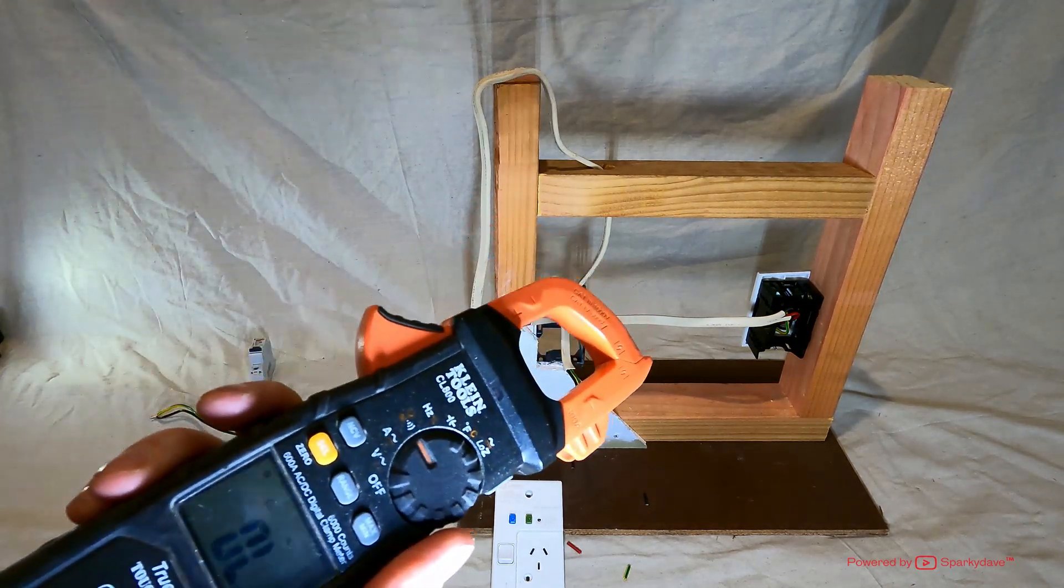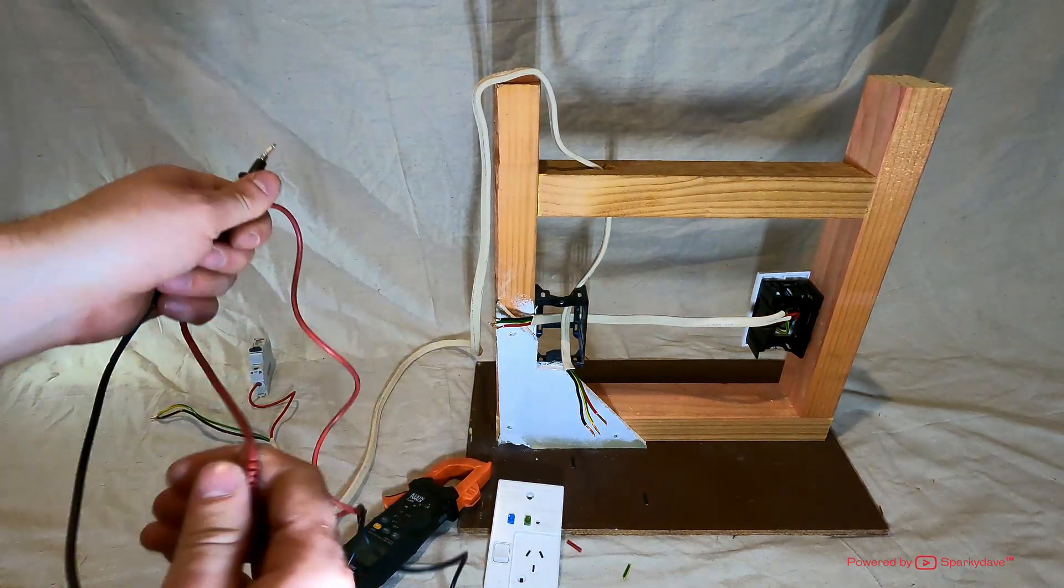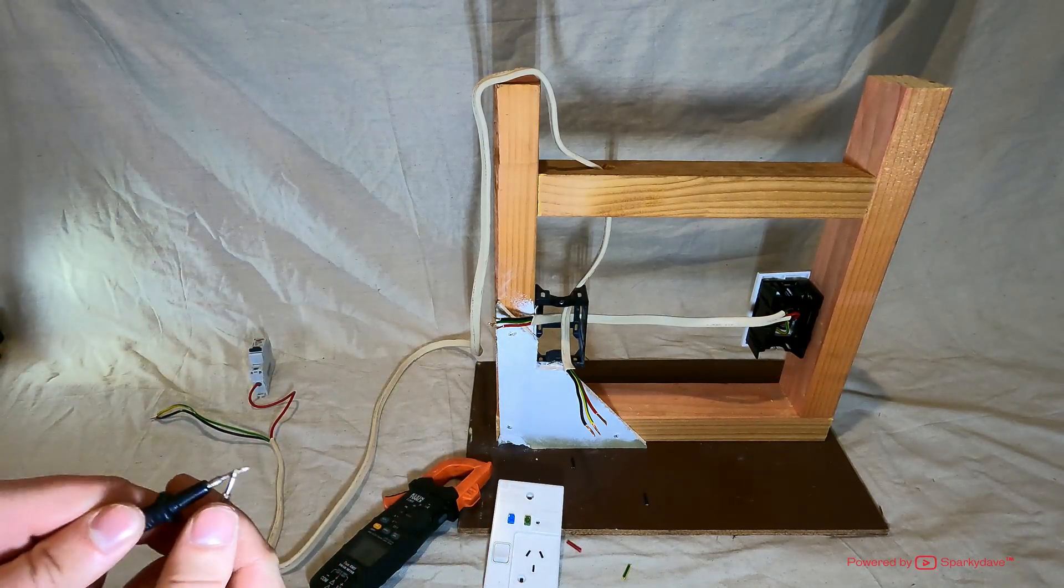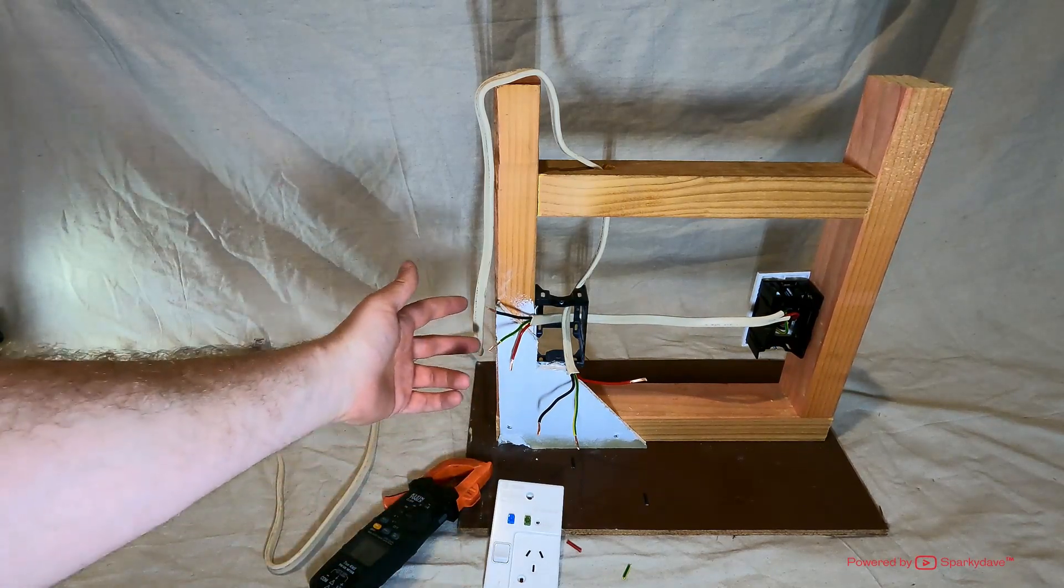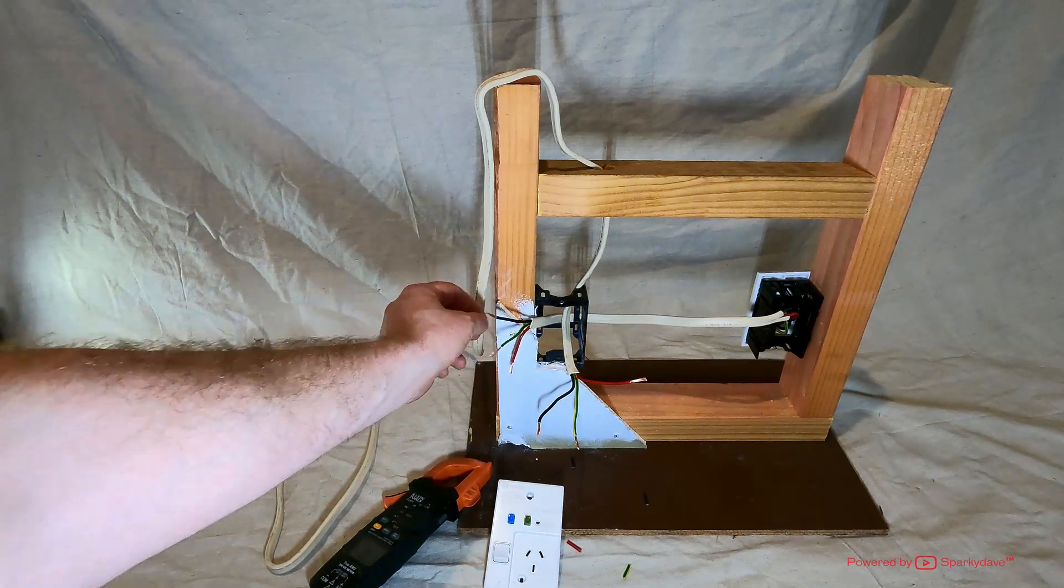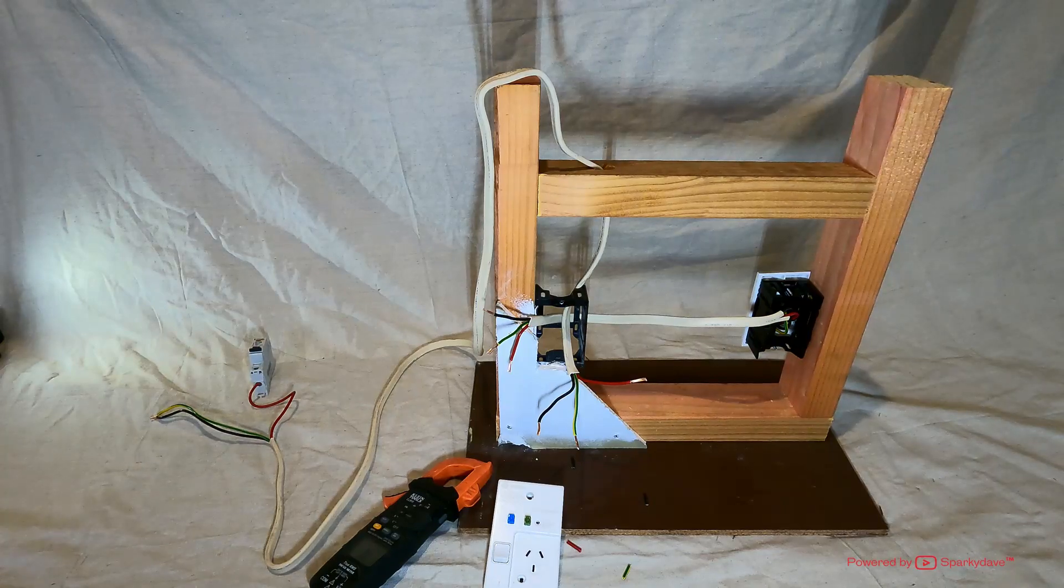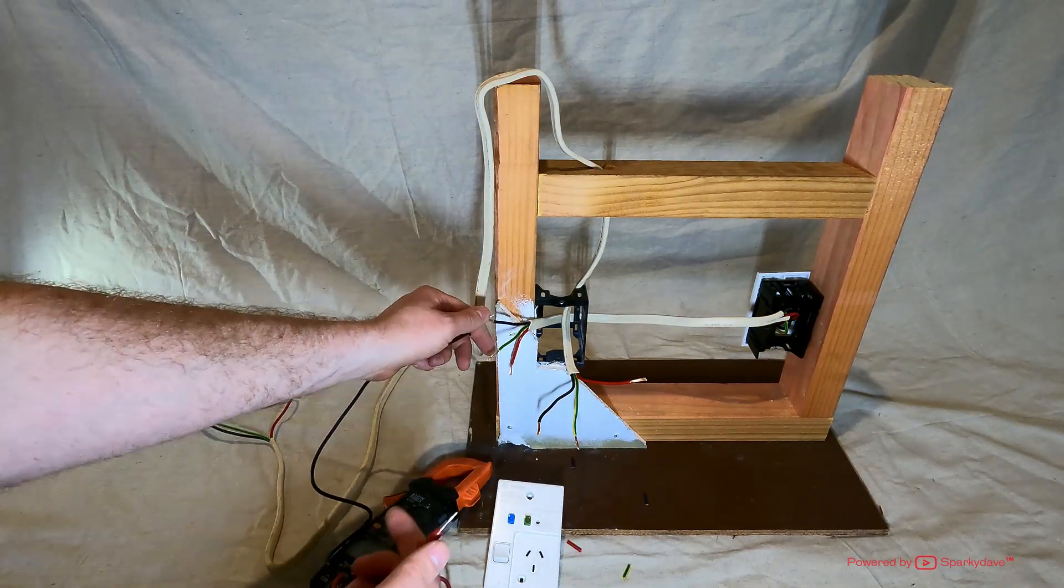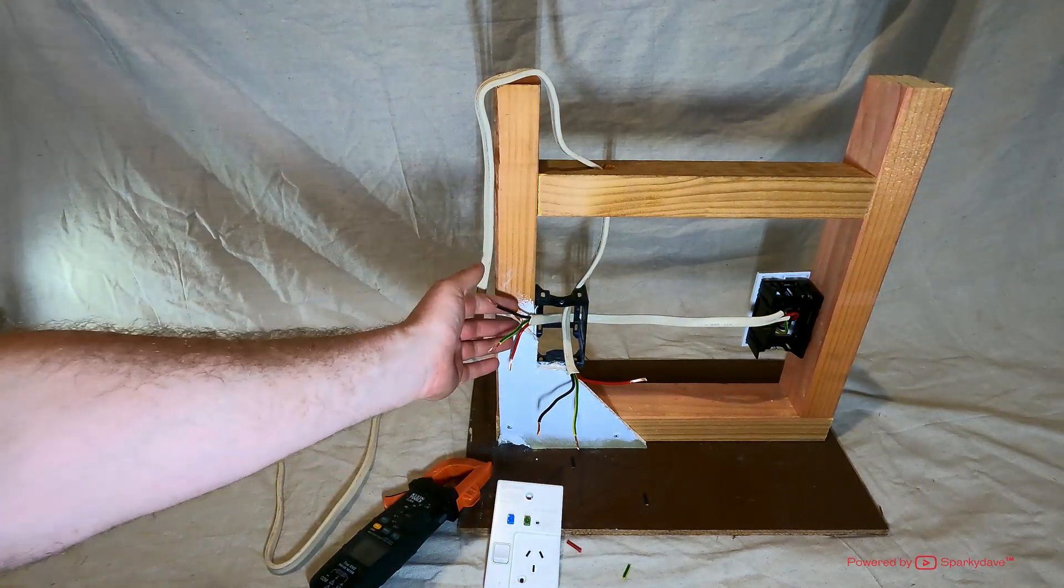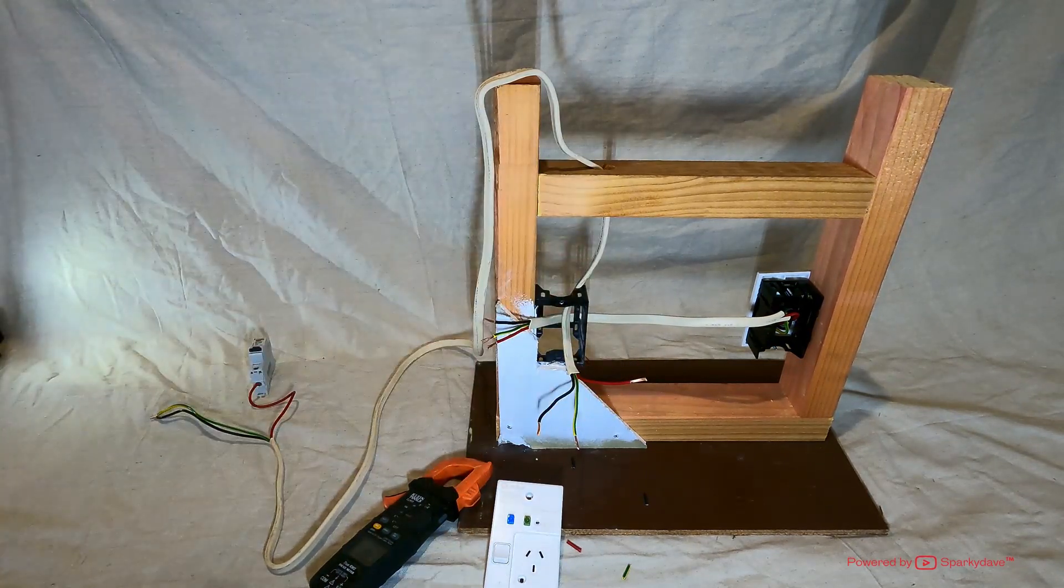It should be on continuity, which means that when you put the two leads together, it will beep. I hope you can hear that. Now we spread the ends out and we're going to be testing between the earth and the neutral, so the green and the black cable cores of each cable, to determine which one actually goes back to the switchboard. If you put it between the black and the green and there's no beep, that means that cable does not go back to the switchboard and it will be a load cable going to the next socket outlet.